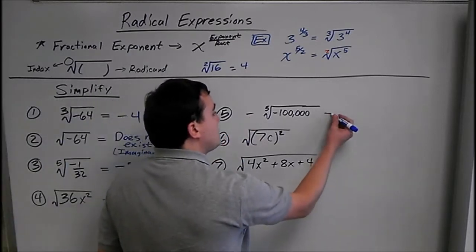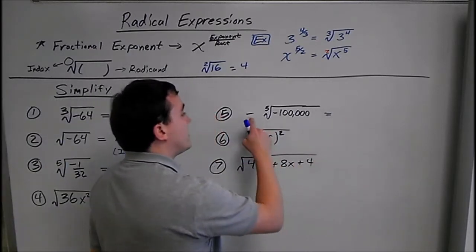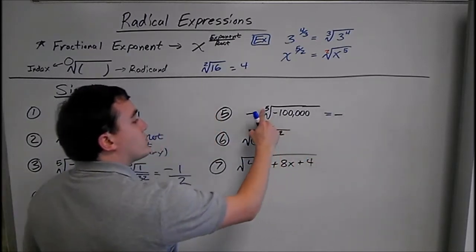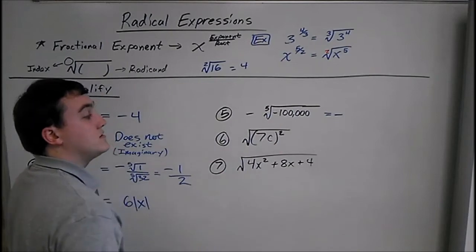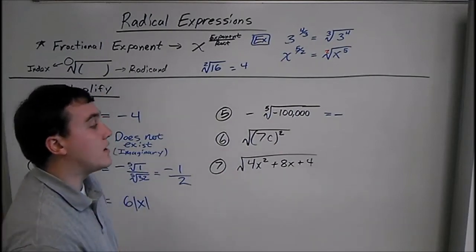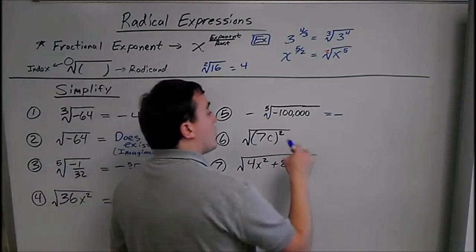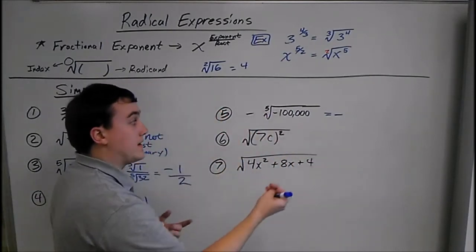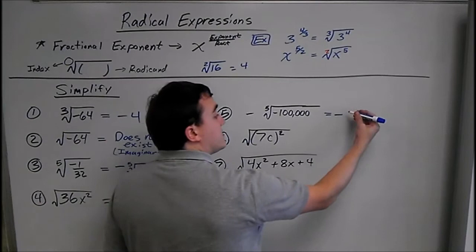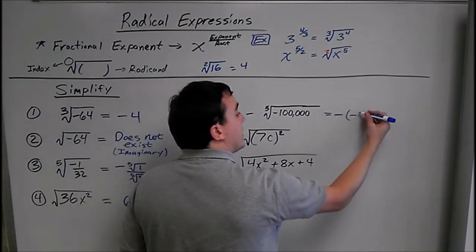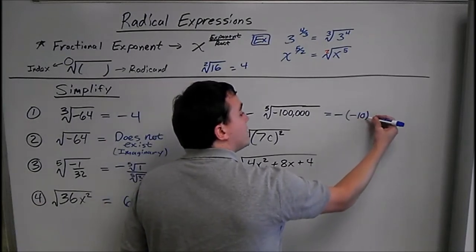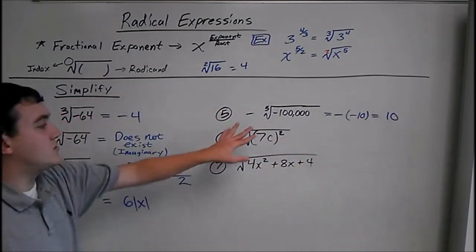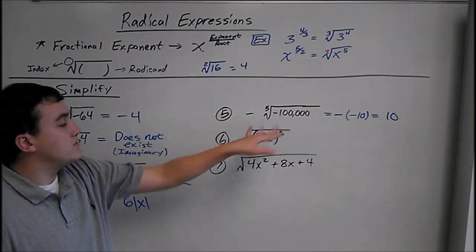Here we have negative 5th root of negative 100,000. Well, the 5th root of 100,000 is 10. So that's negative negative 10, which is just 10, since there are two negatives.